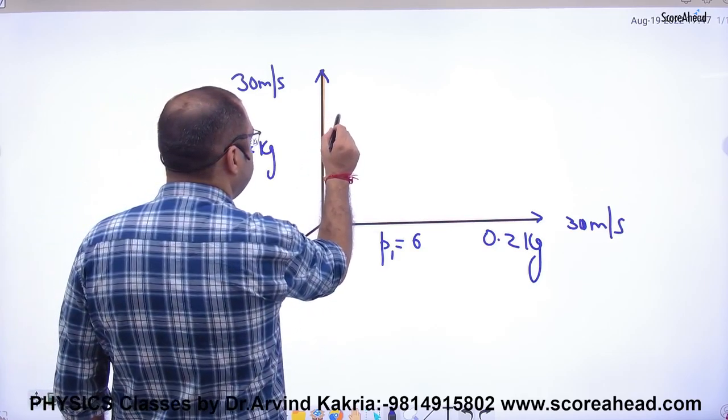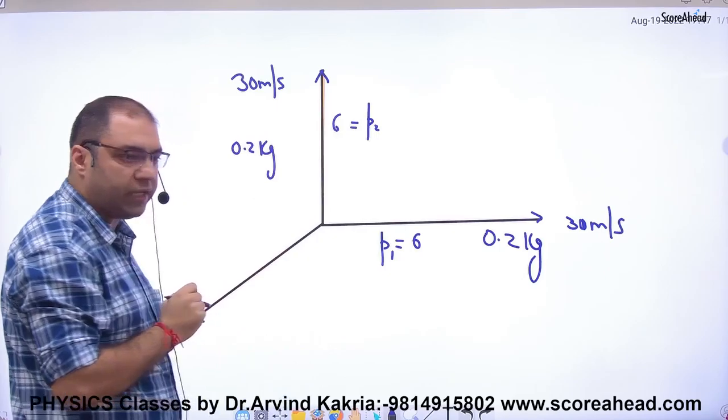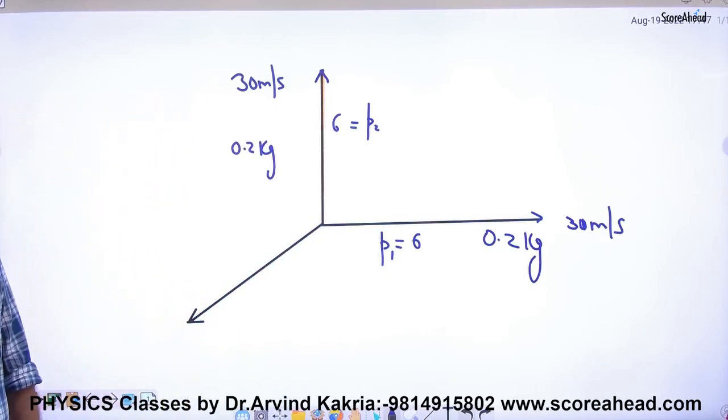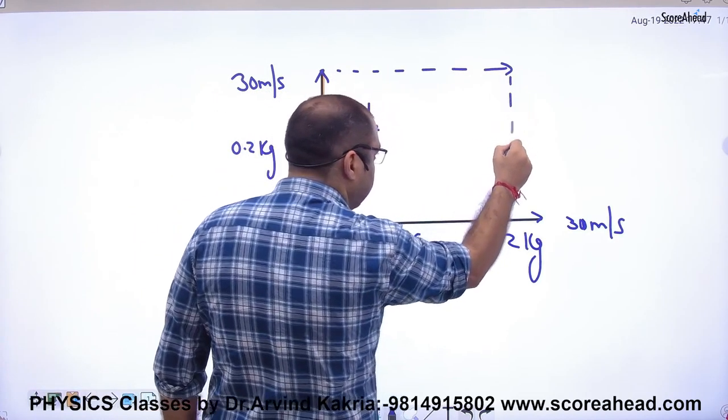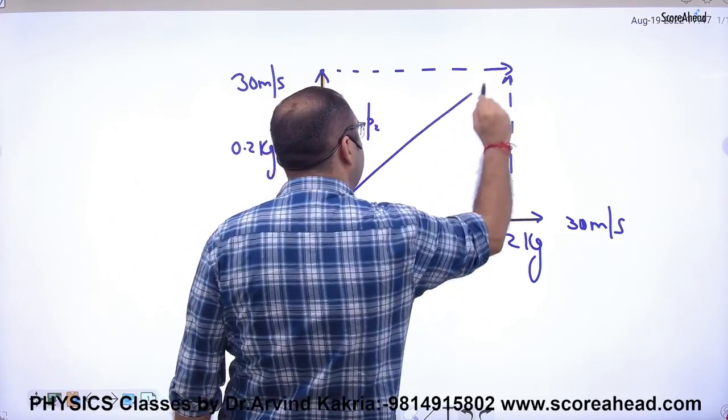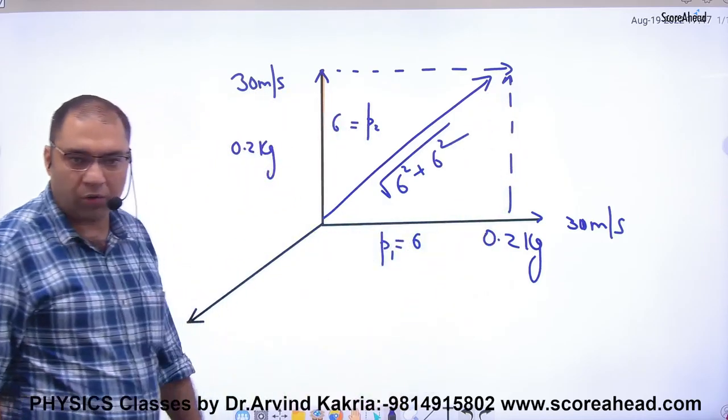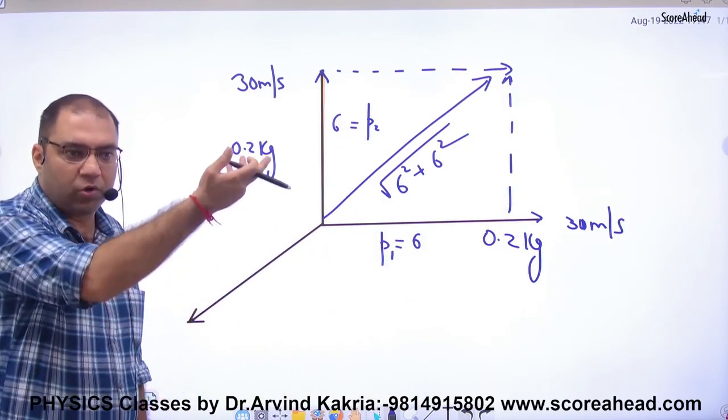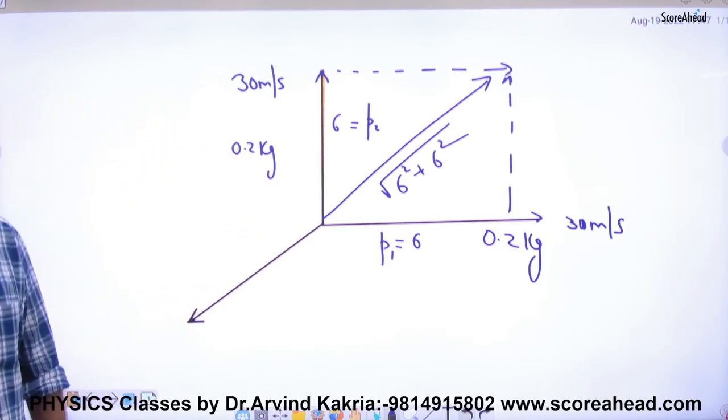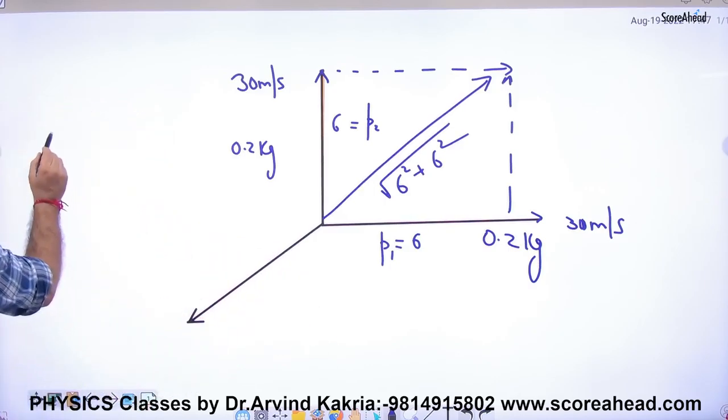Similarly, the second particle's momentum P2 equals mass times velocity, which is also 6. Both particles are 6 and 6, and they're at 90 degrees to each other. If I take their resultant, the net momentum will be square root of 6 squared plus 6 squared.